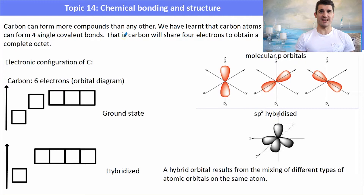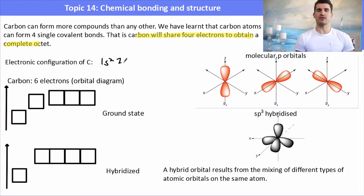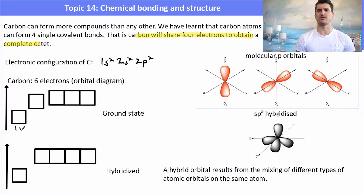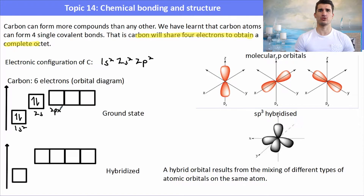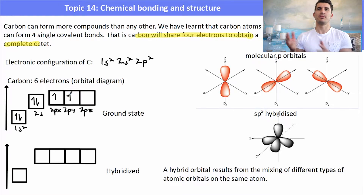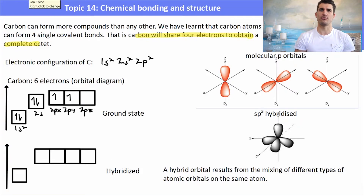Carbon can form more compounds than any other element. Carbon shares four electrons to have a complete octet with eight electrons in the outer shell. The electron configuration of carbon is 1s2, 2s2, 2p2. Looking at the orbital diagram, carbon has a full 2s orbital, one electron in 2px, one in 2py, but no electrons in 2pz — so it looks like it will only form three bonds, not four.